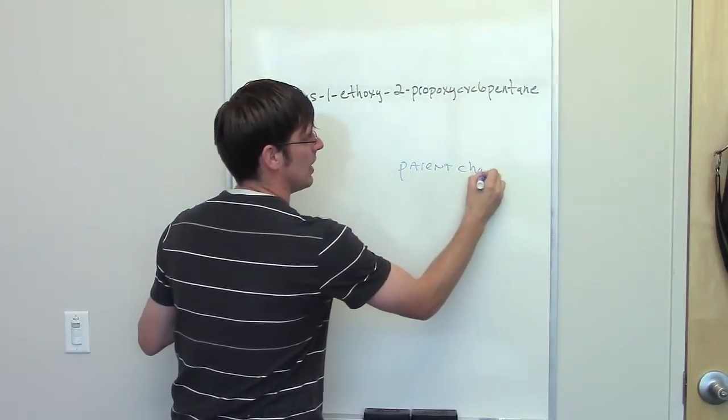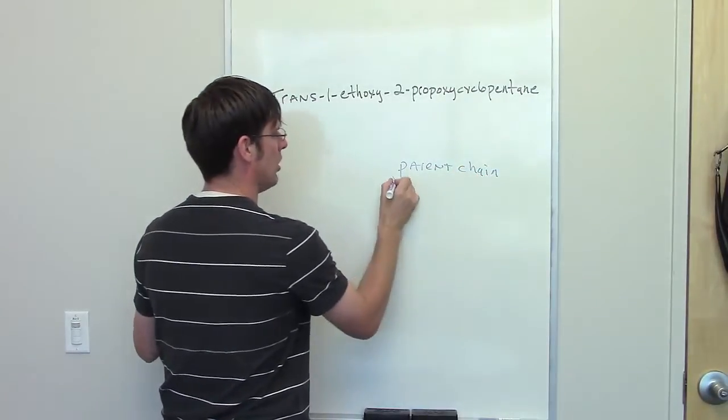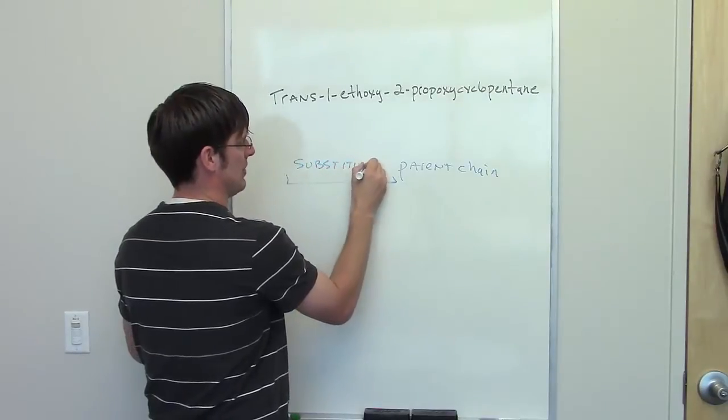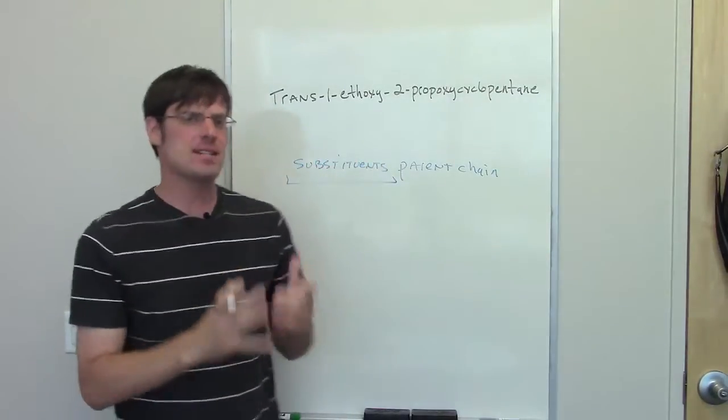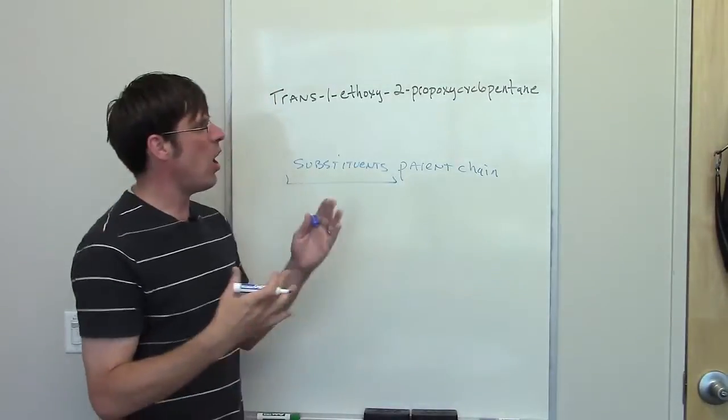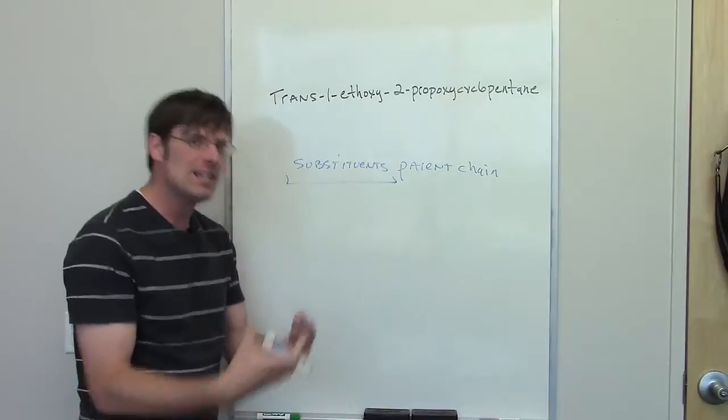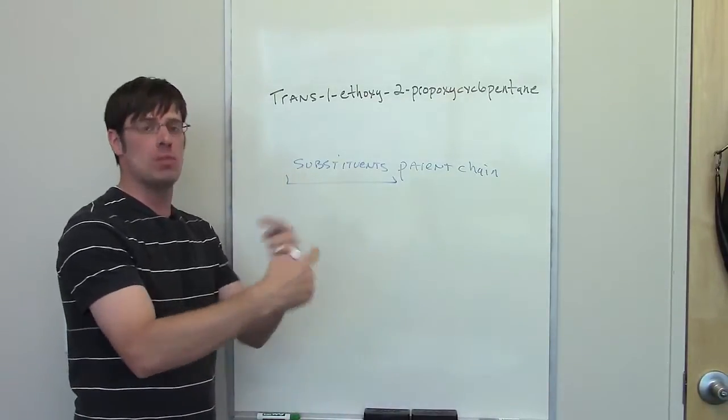at the end of the name, and then all of the substituents written here at the first part of the name. What that means is this. When I do one of these problems, I always look at the end and try to identify what the parent chain is and then work my way backwards.